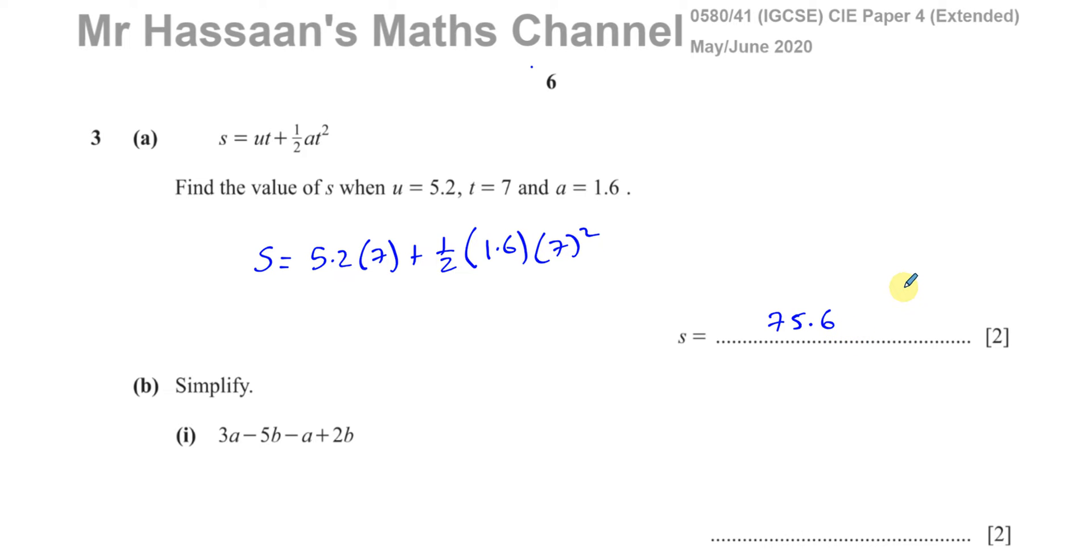Then part B says simplify this expression 3A minus 5B minus A plus 2B. So we have to simplify by combining like terms. You have 3A minus A. Remember, the sign in front of a letter belongs to that letter, so this is positive 3A and negative A. Then you have minus 5B plus 2B. So 3A minus A is 2A, and minus 5B plus 2B is minus 3B. That's pretty simple.